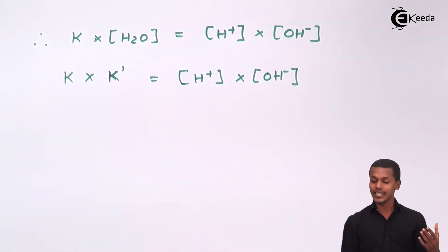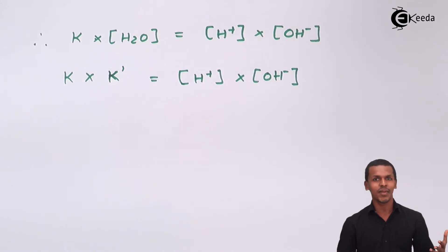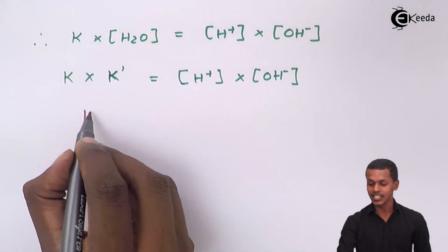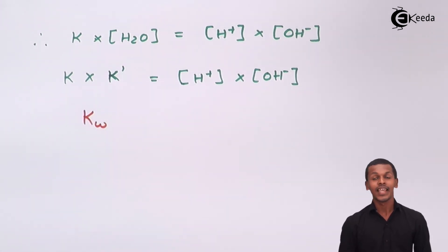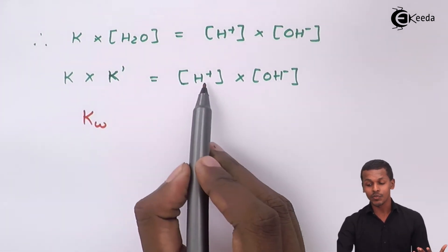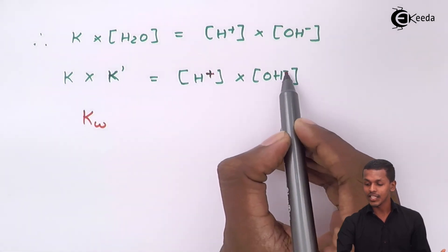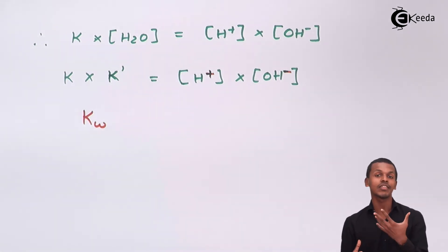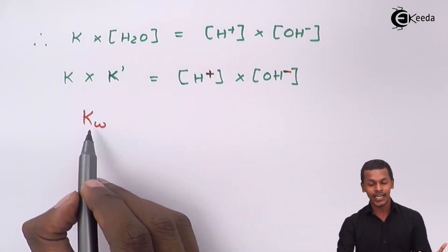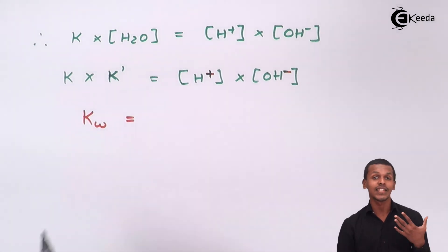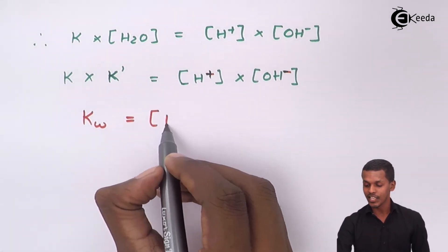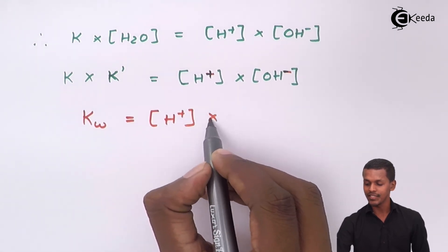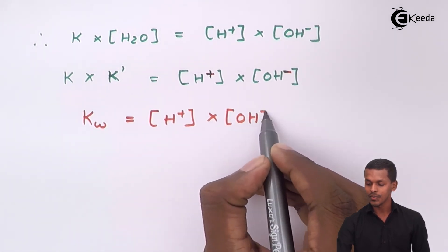There are now two constant values: K (the equilibrium constant) and K' (the constant concentration of water). A constant multiplied by a constant gives another constant, and this combined constant is given by KW. KW is nothing but the product of the H⁺ ion concentration and the OH⁻ ion concentration, and that is why it is known as the ionic product.